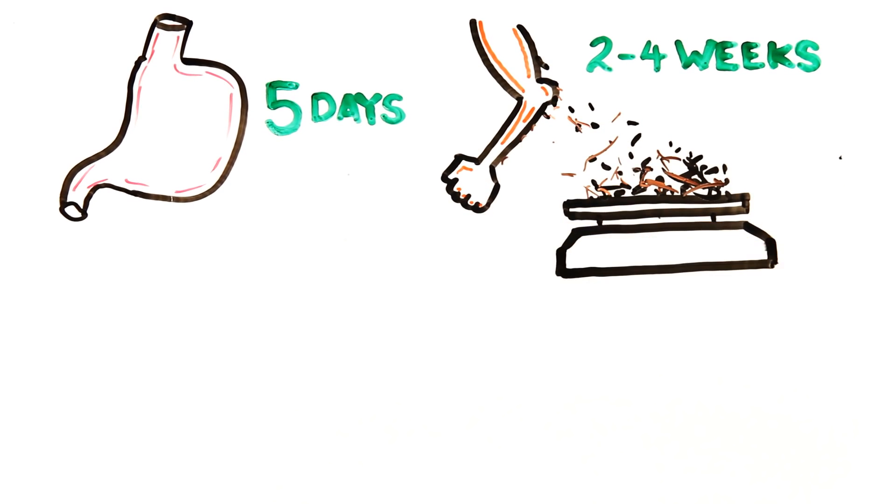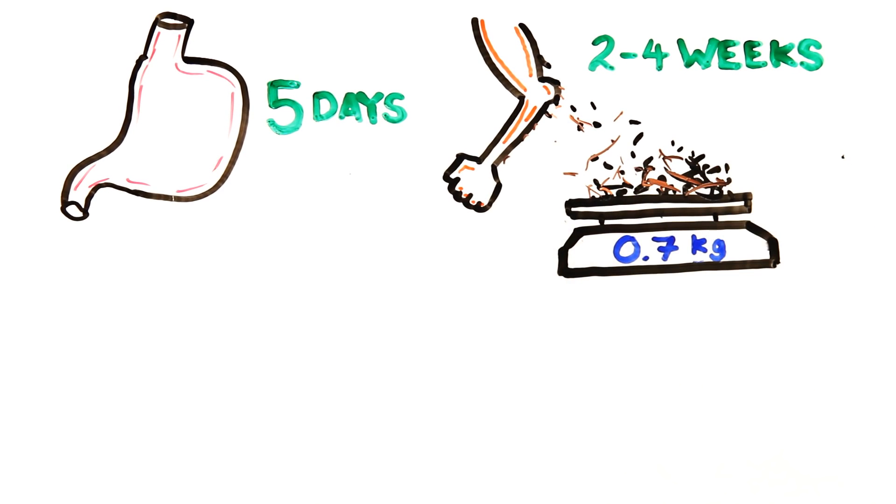The cells that line your stomach regenerate every 5 days, which makes sense as stomach acid can dissolve metal. Your skin's outer layer, known as the epidermis, is shed every 2 to 4 weeks, meaning after one year you'll shed roughly 0.7 kilograms of dead skin.